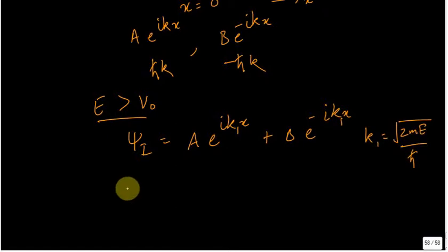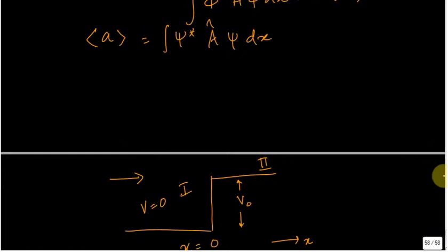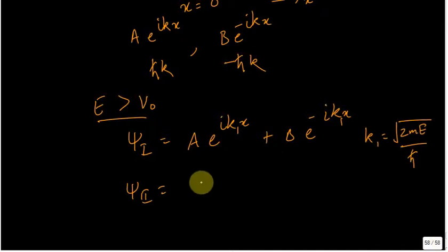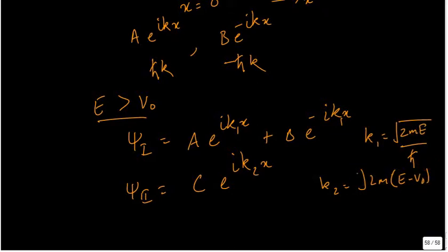And in region 2, if this particle goes above the step and it goes on the other side, then there is nothing to send it back, there is no more wall. So it will travel only in this direction. In region 2 what I have is another constant C e to the power ik₂x, where k₂ would be defined as root 2m(E - V₀) by ℏ. E is greater than V₀ for this particular case.